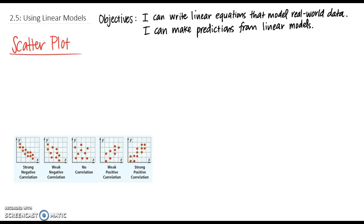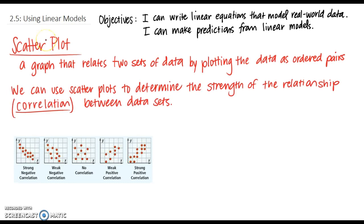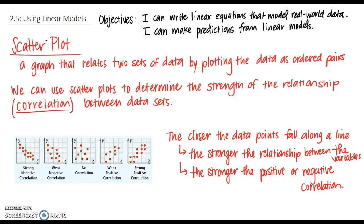A scatter plot is a graph that relates two sets of data by plotting the data as ordered pairs. We can use scatter plots to determine the strength of the relationship, which is called the correlation between data sets. Looking at the graphs below: the first is strong negative correlation — it is close to the shape of a line and the Y's are decreasing as the X's increase, modeling a negative slope. Weak negative correlation is similar but the data points are more spread out. No correlation means you cannot tell if it is increasing or decreasing — just random points. Weak positive models a positive slope but points are not close together, and strong positive models a line with points close together following a positive slope. The closer the data points fall along the line, the stronger the relationship between those two variables.